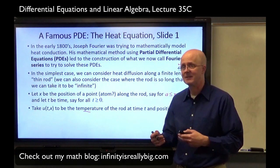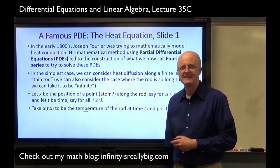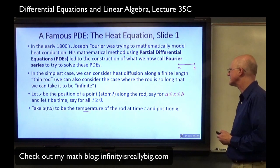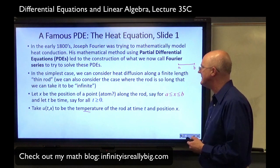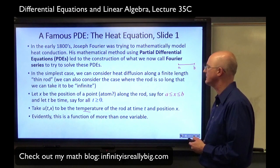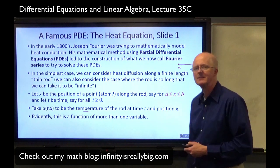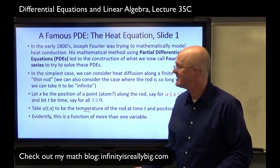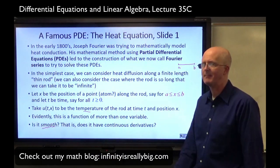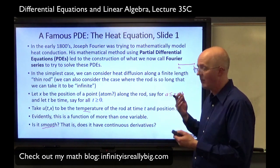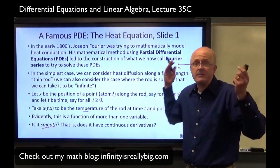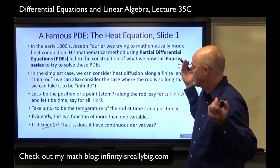Take U of T comma X to be the temperature of the rod at time T and position X. It could be degrees Fahrenheit, degrees Celsius, or Kelvin. If we allow it to be degrees Fahrenheit or Celsius, it could be negative sometimes. The scale does need to be considered in real life. It's a temperature at a specific point at a specific time. It can vary as T varies and X varies. It's a function of more than one variable.